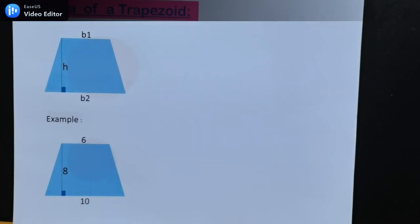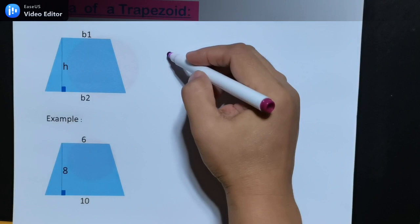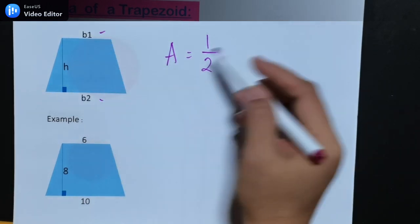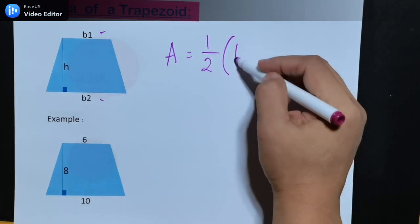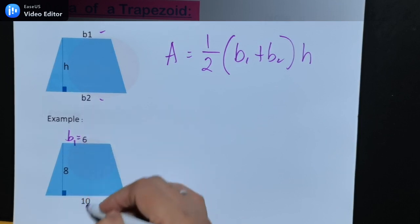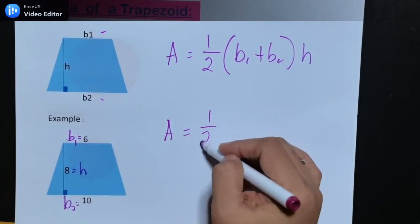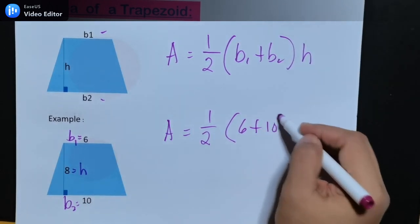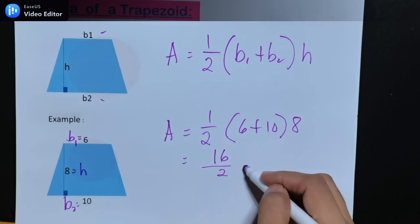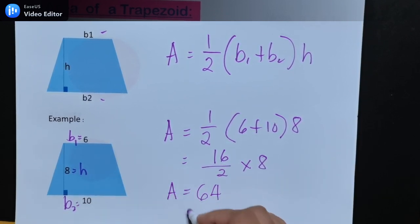Next, area of a trapezoid. The formula is similar to the triangle but a trapezoid has 2 bases. So the area is one-half times (B1 plus B2) times the height. From the given example, B1 = 6, B2 = 10, and height = 8. So the area is one-half times (6 plus 10) times 8. That is one-half times 16 times 8, which is 8 times 8. The area is 64.